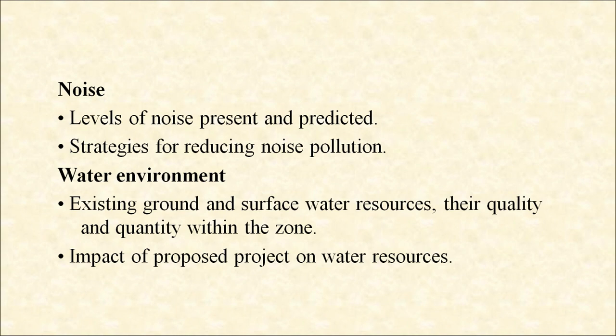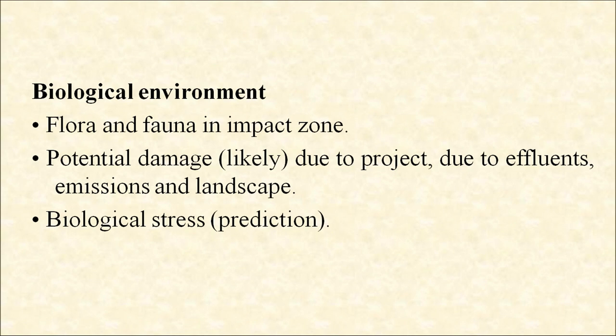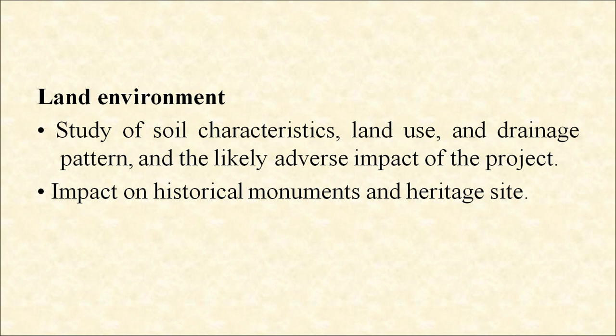For water: existing ground and surface water resources, their quality and quantity within the zone, and impact of the proposed project on water resources. For biological environment: flora and fauna in the impact zone, potential damage due to the project from effluent emissions and landscape biological stress. For land environment: study of soil characteristics, land use and drainage pattern, likely adverse impacts of the project, and impact on historical monuments and heritage sites. Economic benefits arising out of the project have to be compared to all the factors already mentioned. Environmental concerns have to be made a part of the decision to set up a project.